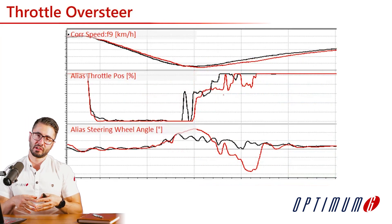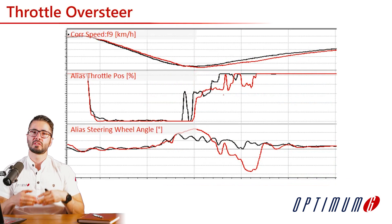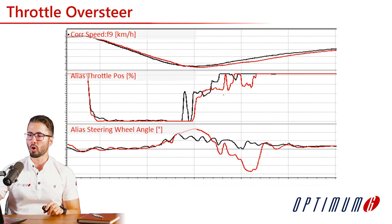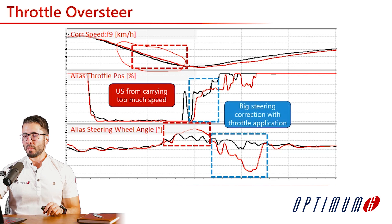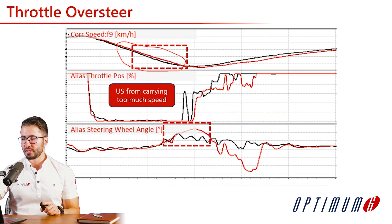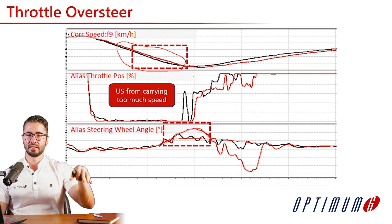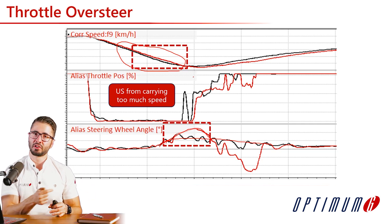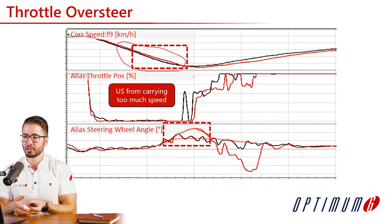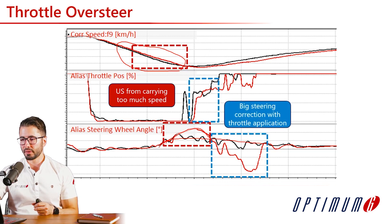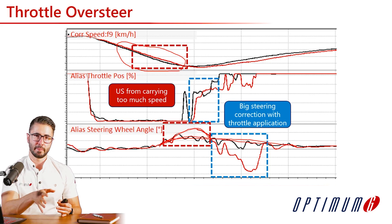Now we see throttle oversteer, which happens at lower speeds or when too much power saturates the rear tires. The red driver carries more speed into the corner, inducing higher understeer — shown by higher steering angle compared to baseline. Because the car didn't rotate enough at entry and apex, when the driver goes back on power with tires still generating lateral force, it's easier to saturate the rear tires and cause oversteer. We can see big corrections to the right on a left-hand turn, confirming this throttle-induced oversteer.